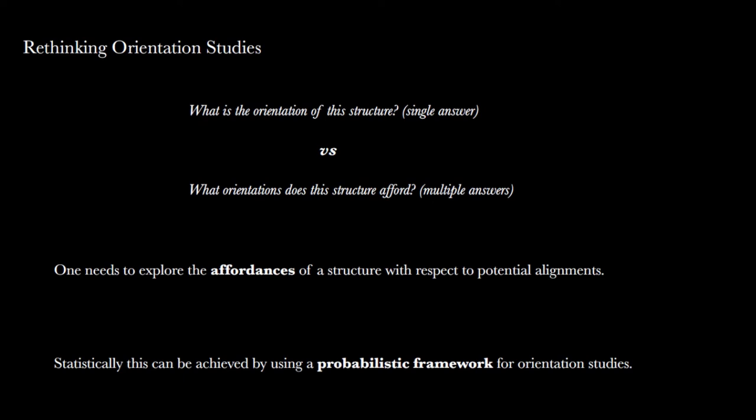I think the beginning should be to rethink the very concept of orientation, or how we approach it. The usual question in orientation studies is 'What is the orientation of this structure?'—that question affords a single answer, looking for one orientation, one value. I think it would be much more useful to think: 'What orientations does this structure afford?' Because as we saw before, there is a range of orientations that are possible.